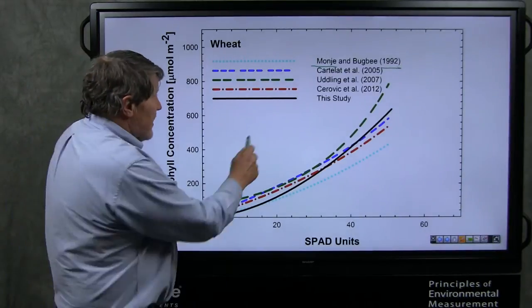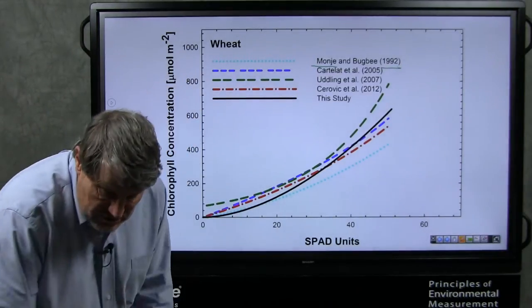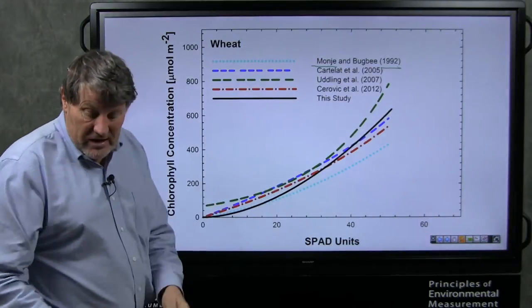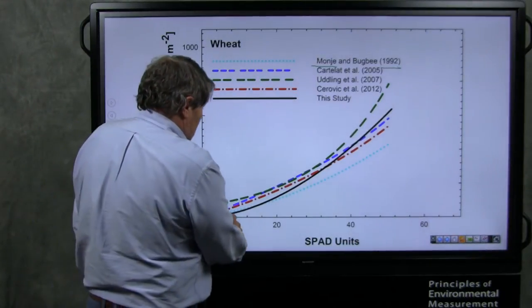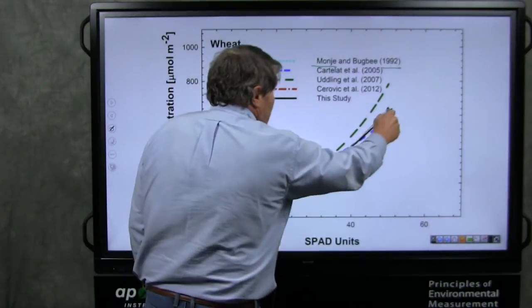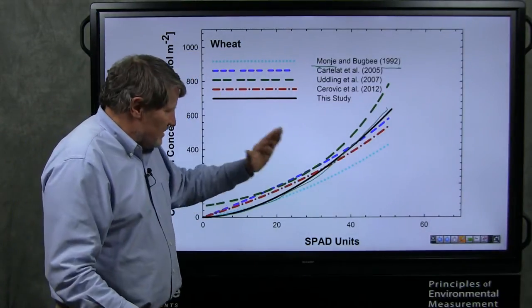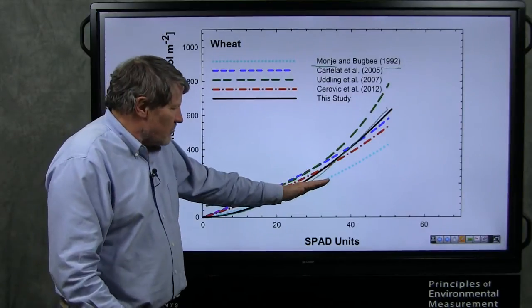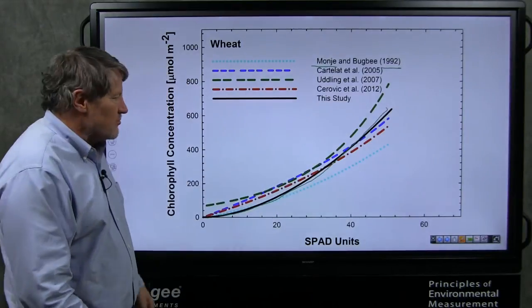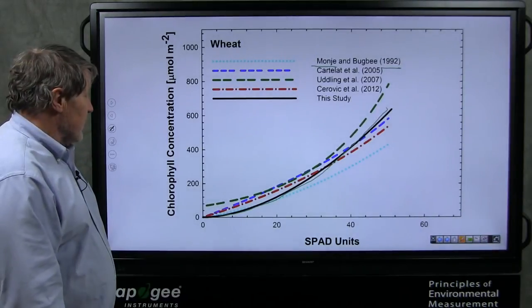So when we did it again, this study means this Plant Cell and Environment paper right here, we got this curve. And fortunately the reviewers agreed, yes, these are all the right techniques. That's the gold standard curve. It replaces all these previous curves which were similar but not exactly right.